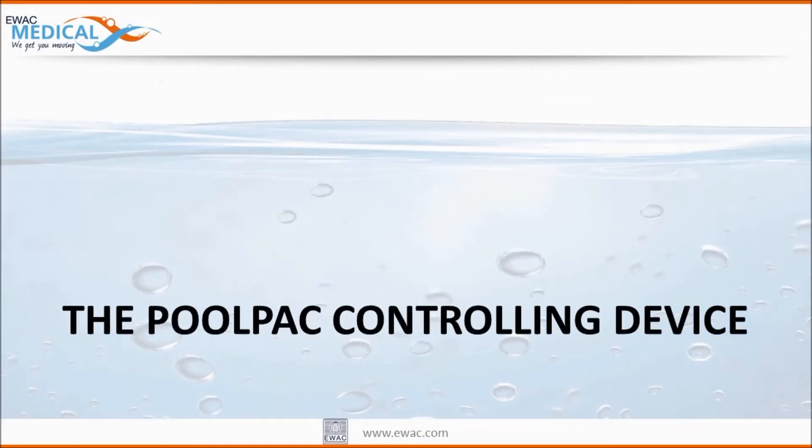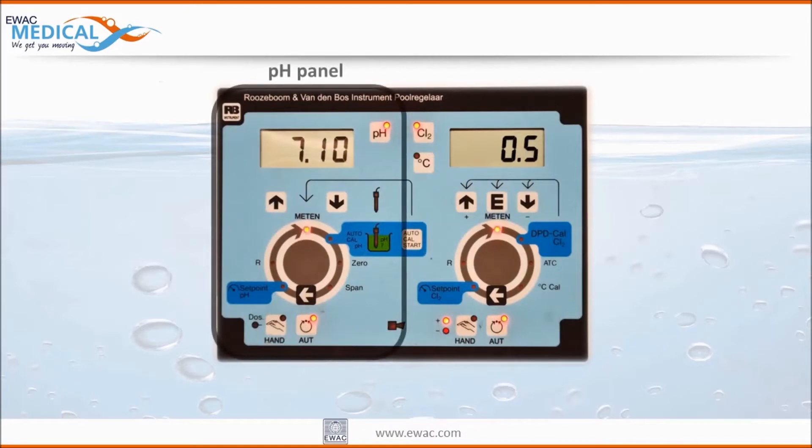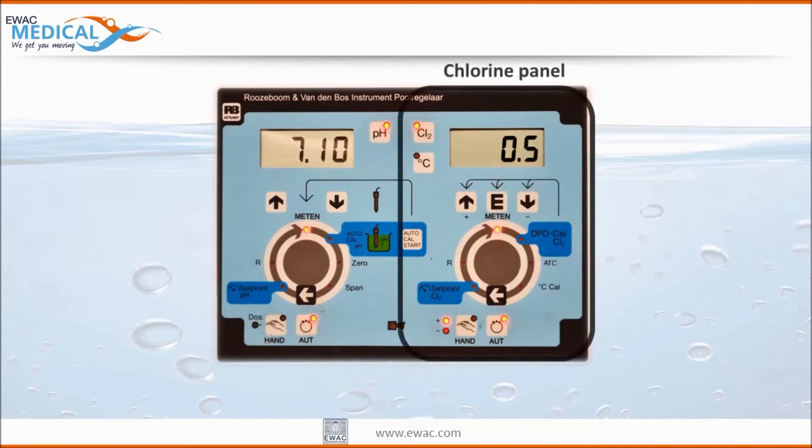The Pool Pack controlling device layout is divided in two. The left side of the panel is used for pH controlling. The right side of the panel is used for chlorine controlling.